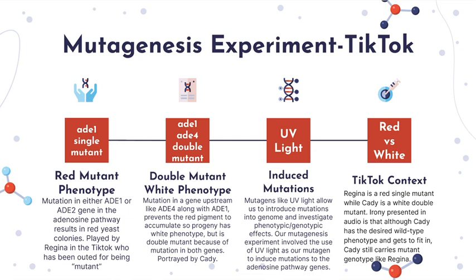The second mutagenesis experiment started with an AD1 haploid mutant with a mutant red phenotype. When irradiated with UV light, some colonies turned white because the UV induced another mutation in a gene upstream of AD1 and AD2. This resulted in a double mutant — not only was AD1 mutated, but there was also a mutation in an upstream gene, AD4 through AD8.